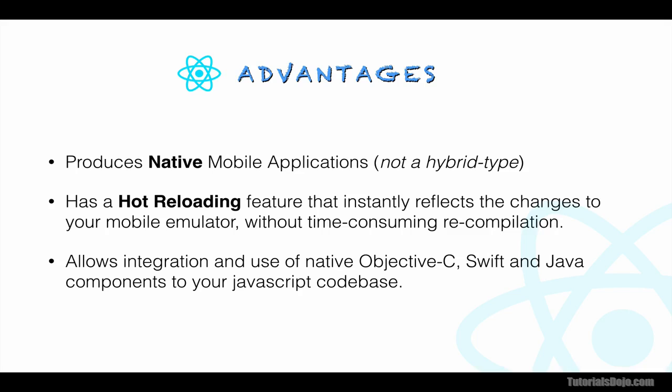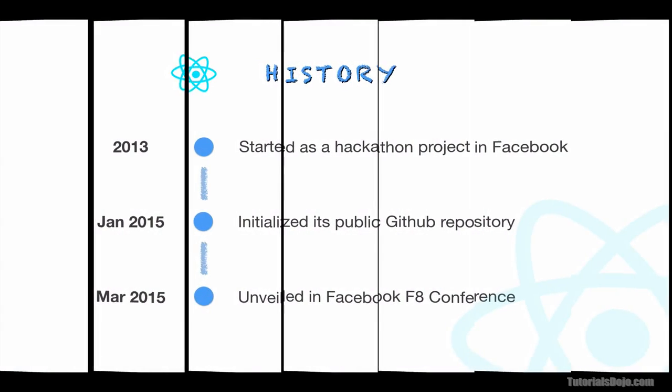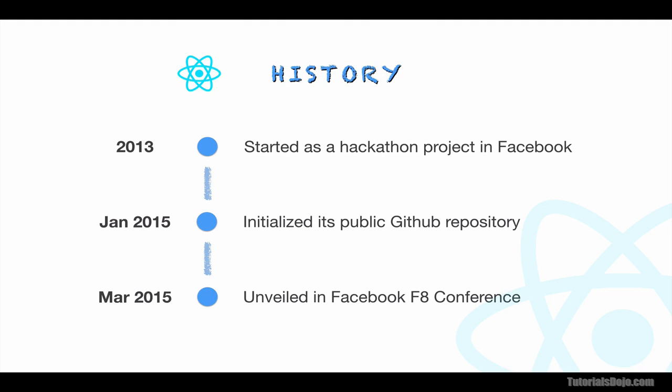Let's now take a quick look at the history of React Native. Rumor has it that this framework started as an internal hackathon project way back in 2013. About two years after that, the public GitHub repository was created in January 2015, and at the F8 conference of that same year, Facebook unveiled React Native to the public. This is quite a new and rapidly evolving framework, so you should always stay updated on its new features and changes.